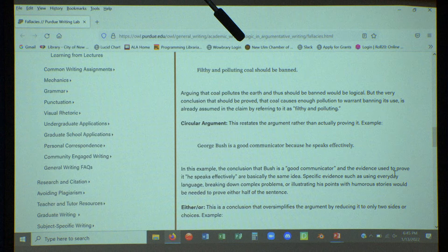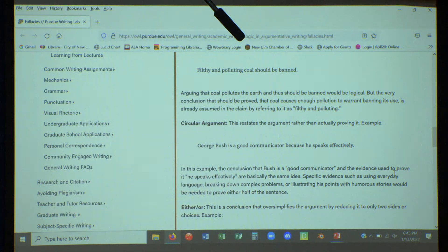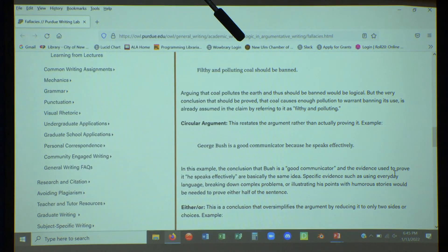Circular argument. A little bit dated here, but George Bush is a good communicator because he speaks effectively. In other words, you are just restating your idea in another way to try to say that you've proved your point. I'm good at swimming because I'm a good swimmer, right? But it happens. This seems very simplistic because it's a simple sentence. But when you're looking for a circular argument, it usually involves a lot of talking in which they go around and around and it takes a while for you to sift through that and say, well, they didn't actually say anything.